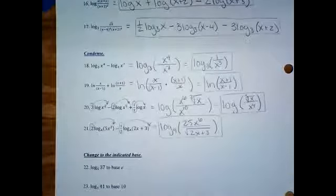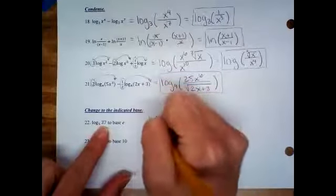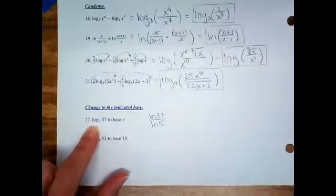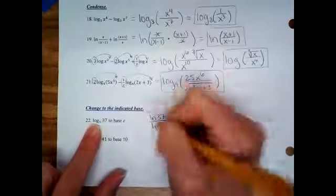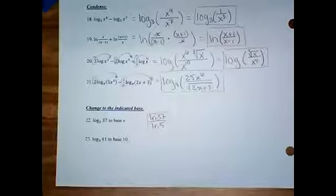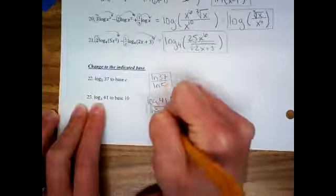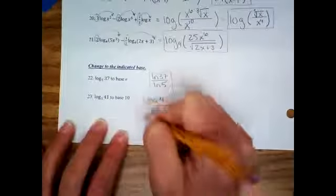These last two use the change of base formula. Log base five of 37 changed to base e: ln of 37 over ln of 5. We used to need this because calculators only had base e and base 10. Log base three of 41 changed to base 10: log of 41 over log of 3. That's how you used to enter it in the calculator.